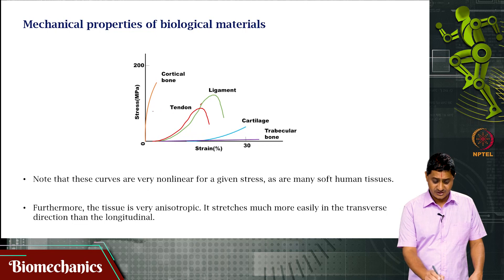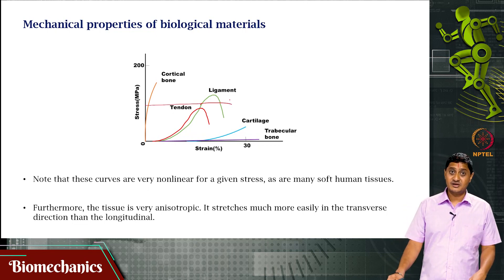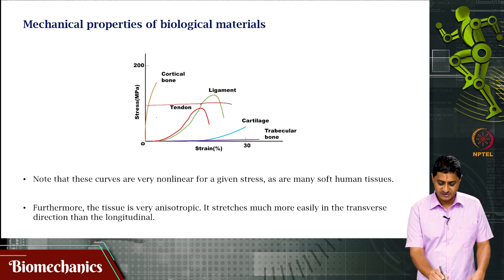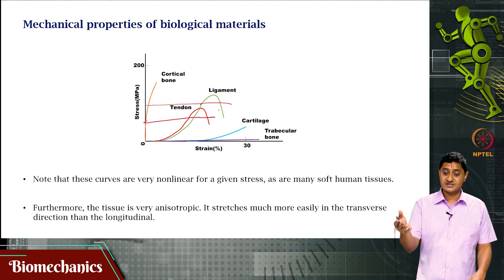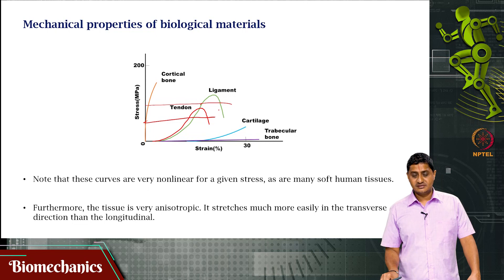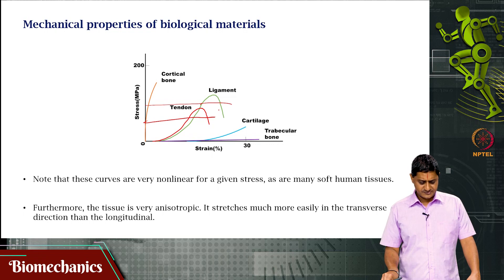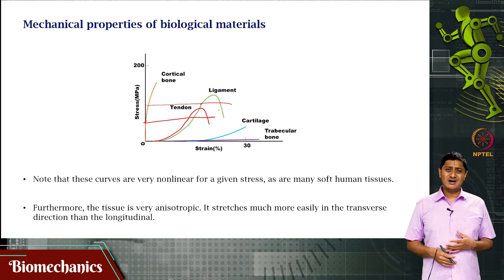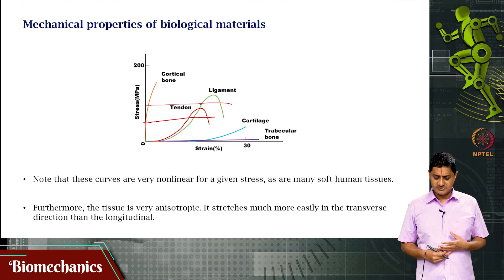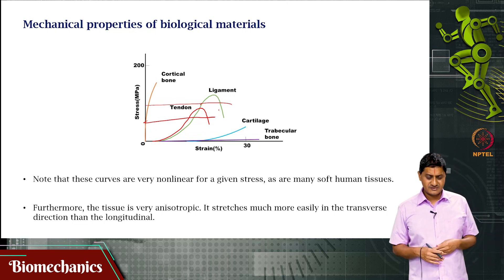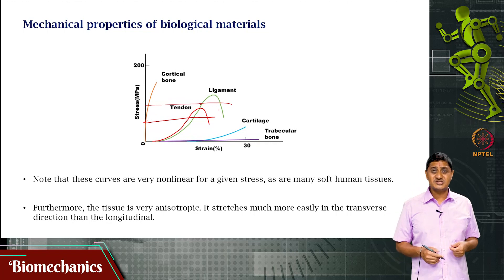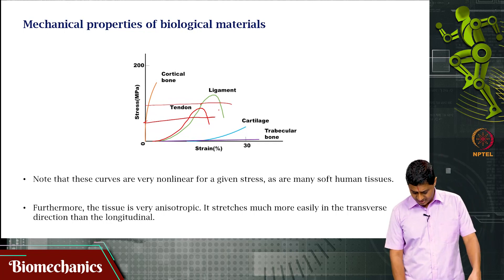For biological materials, the curves are very non-linear. For ligaments, they look such that for any given stress there are going to be two different strains. Depending on the regime within which you are working, for a given stress there are going to be two different strain values for the tendon — very non-linear. This is true of many soft tissues in humans. Also, biological materials are not isotropic — they stretch much more easily in the transverse direction compared with the longitudinal direction, so it depends on the direction in which you apply the force.